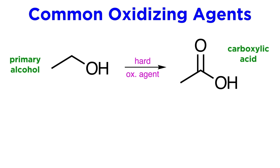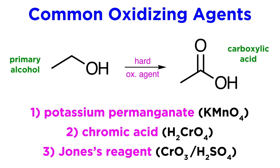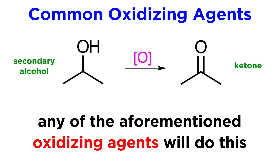This is in contrast with hard oxidizing agents, like potassium permanganate, chromic acid, or Jones's reagent, which each oxidize a primary alcohol all the way to the carboxylic acid, which involves three bonds to oxygen. A secondary alcohol will be oxidized to the ketone when using any of these oxidizing agents, as in this context these will not have the ability to break carbon-carbon bonds.